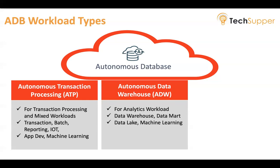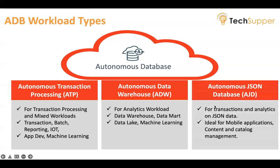The last workload type is the Autonomous JSON Database. It is a version of Autonomous Database exclusively for transactions and analytics on JSON data, and includes a MongoDB API. It is ideal for mobile applications, development, applications with dynamic personalized experiences, and content and catalog management.